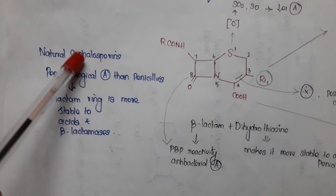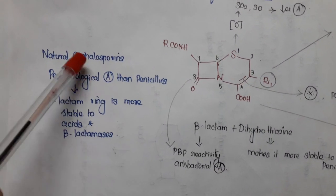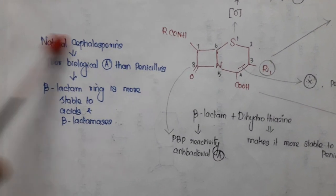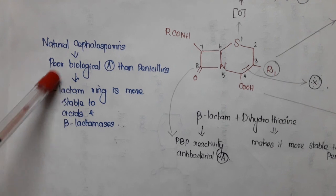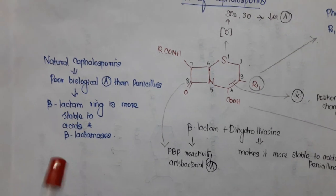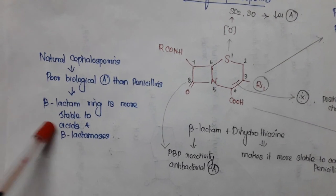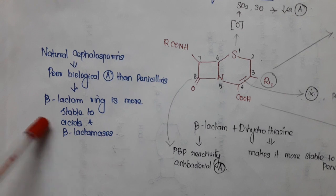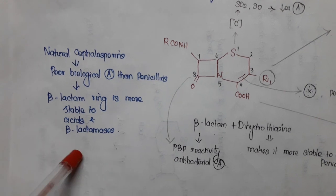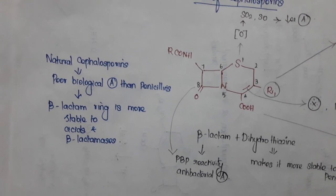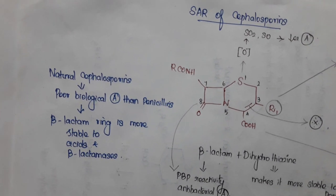Comparing natural cephalosporins with penicillins, cephalosporins have poor biological activity, but the beta-lactam ring is more stable to acids and beta-lactamases. That is all about the SAR of cephalosporins.